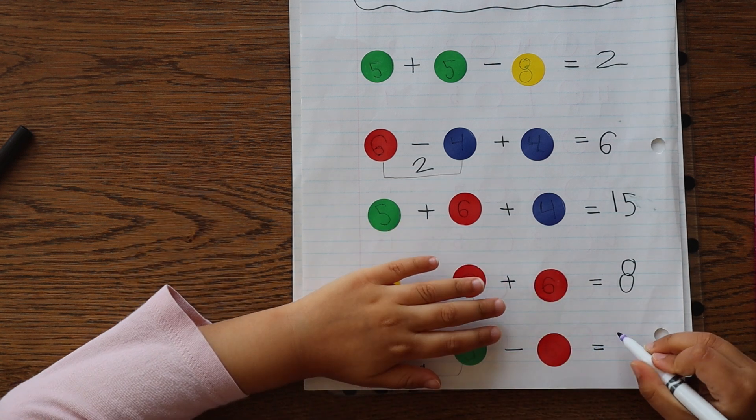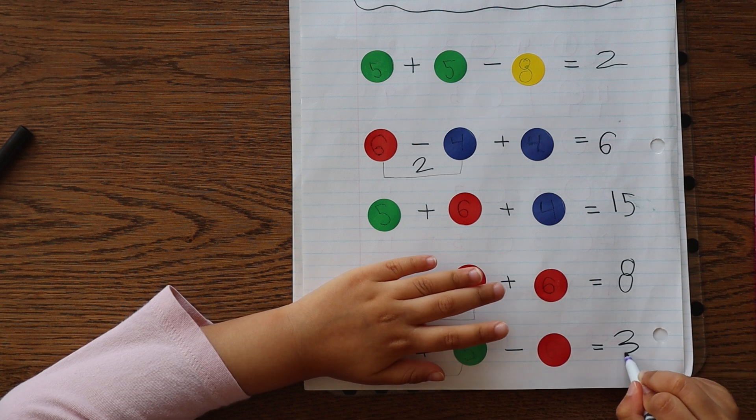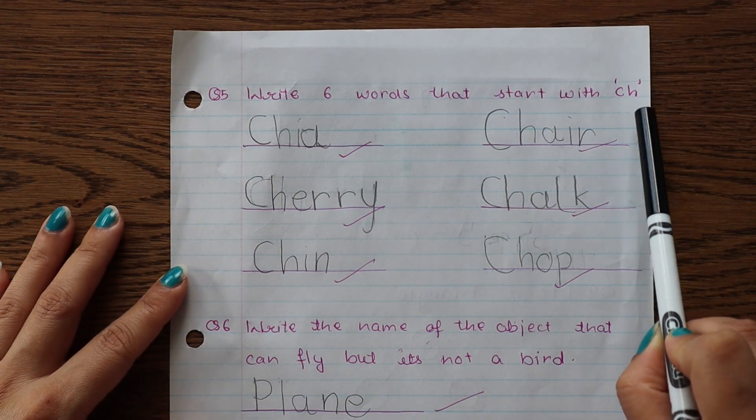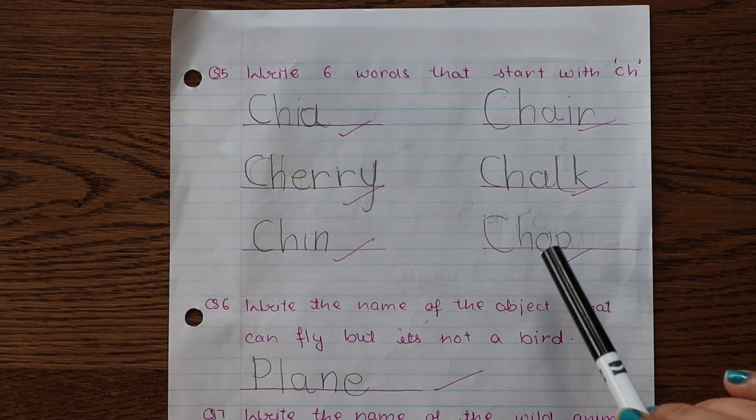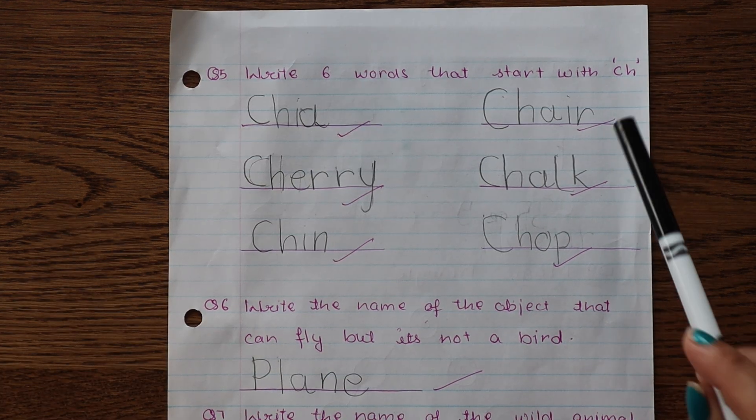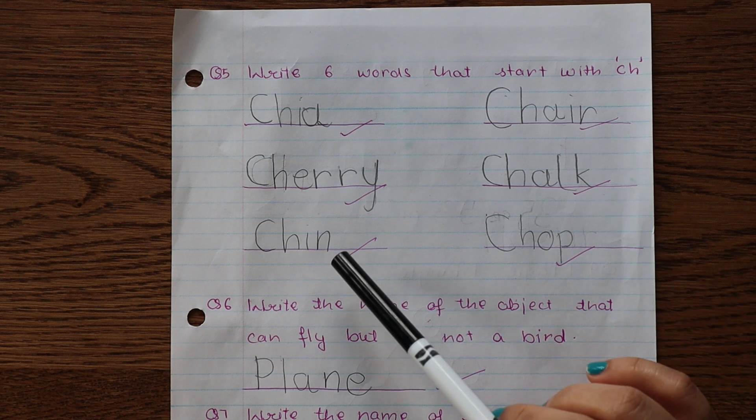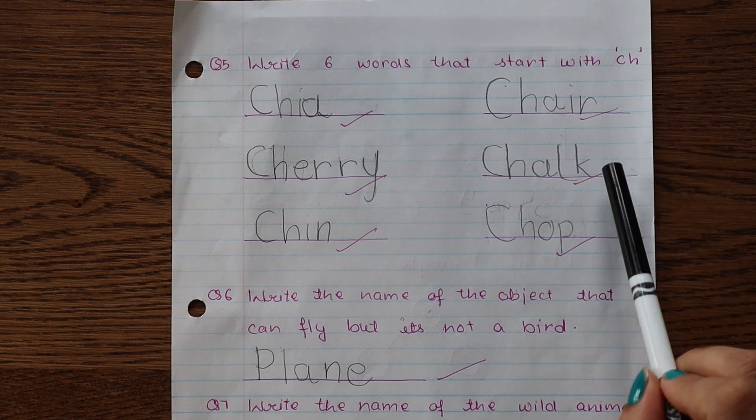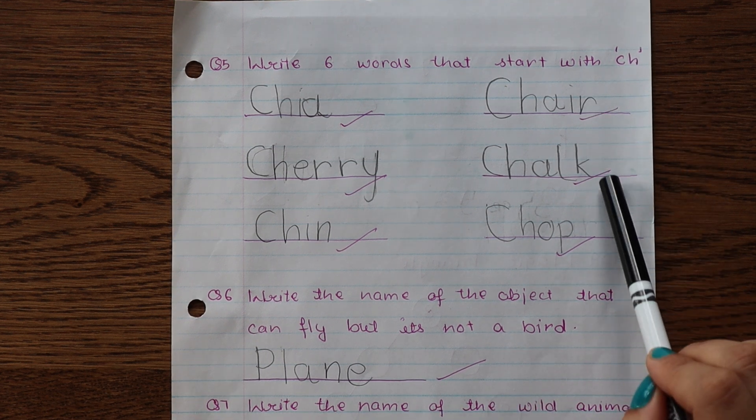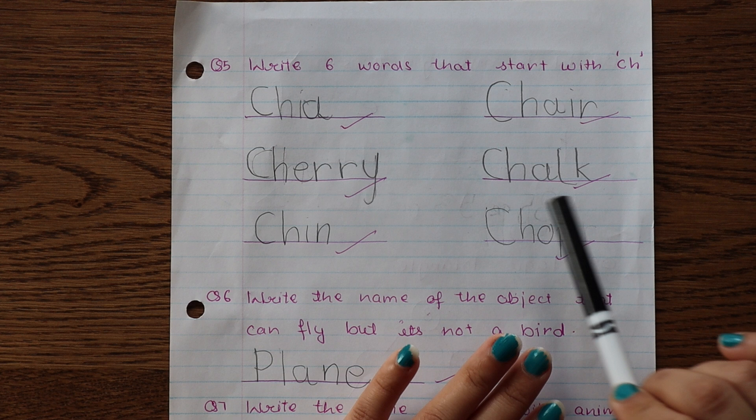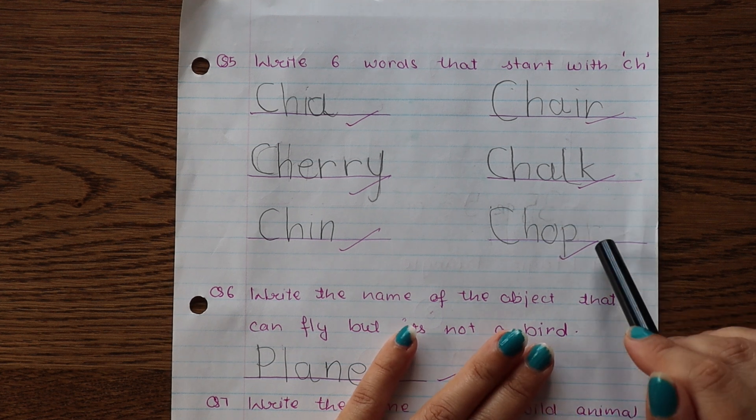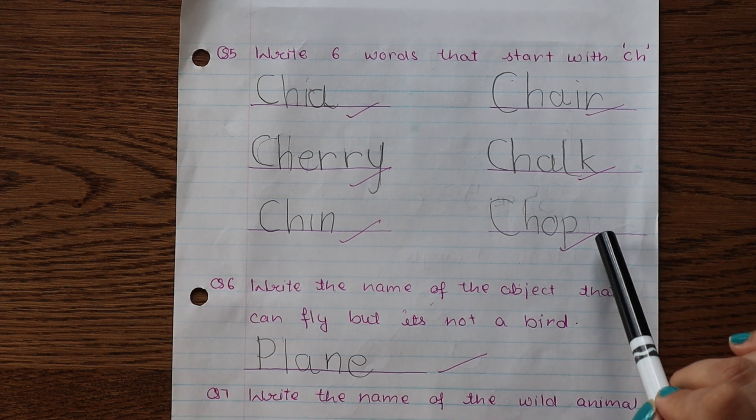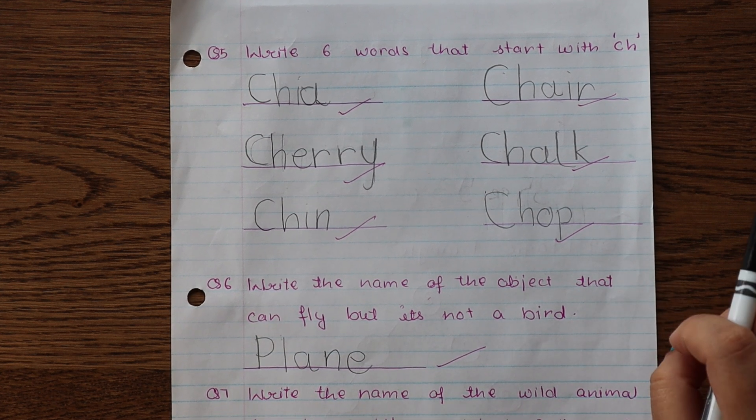Next is write six words that start with CH sound. These days we are practicing blends and digraphs, especially their writing practice. So I asked Chia to write six words that start with CH sound, and I did help her with the spellings of chalk and chair. So these kind of activities are really very important. Initially you can help your child with the spellings, but I'll highly suggest to include these activities in your child's daily practice.